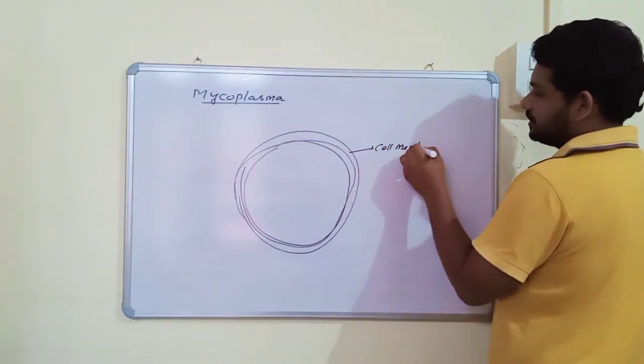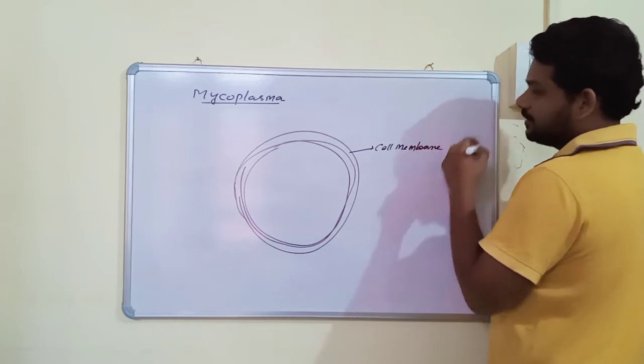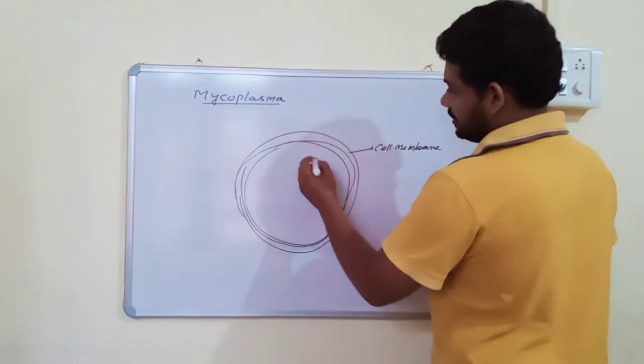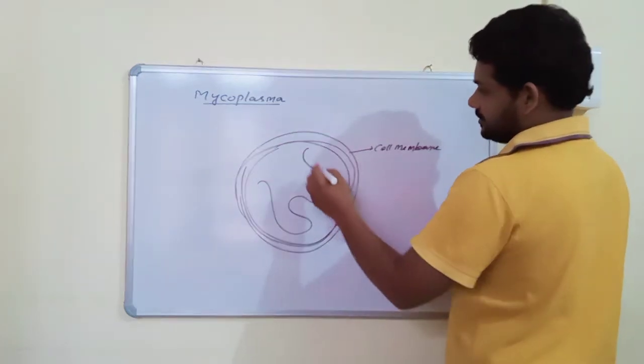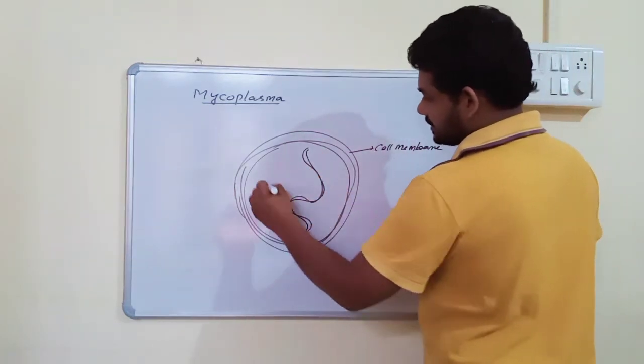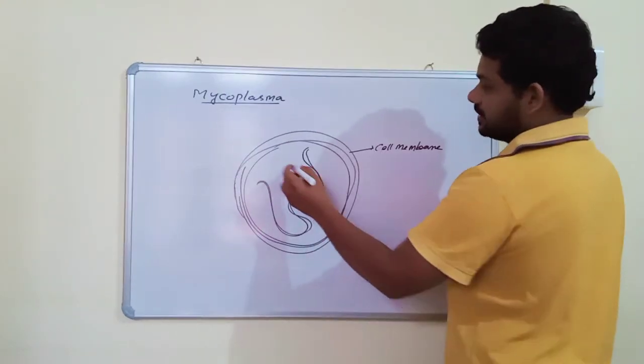And it is totally prokaryotic in nature. In prokaryotic nature the true nucleus is absent. Nucleus-like structure is present that is called the incipient nucleus.